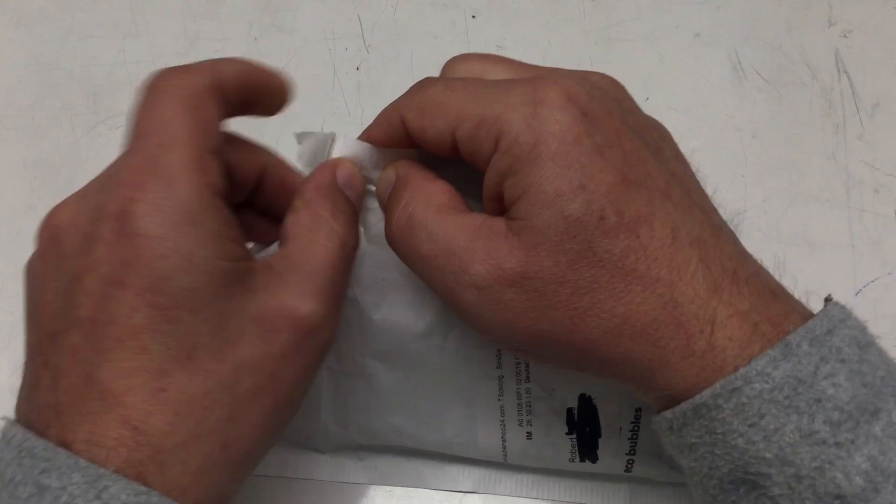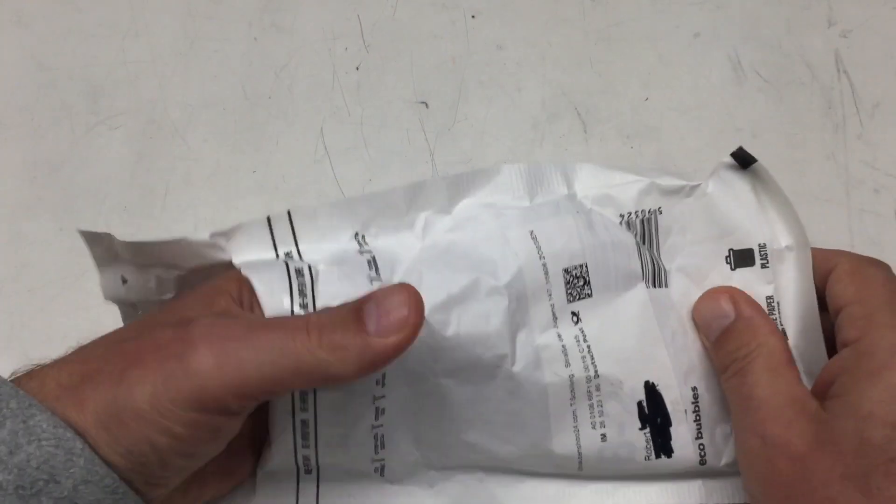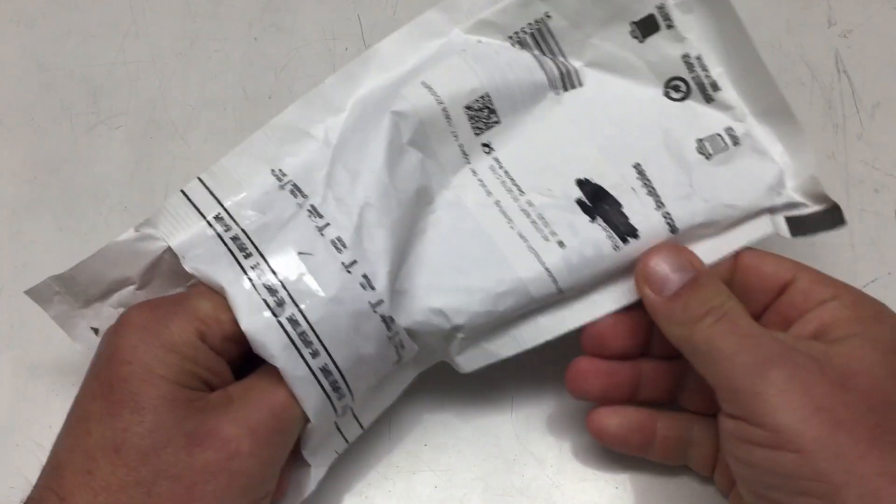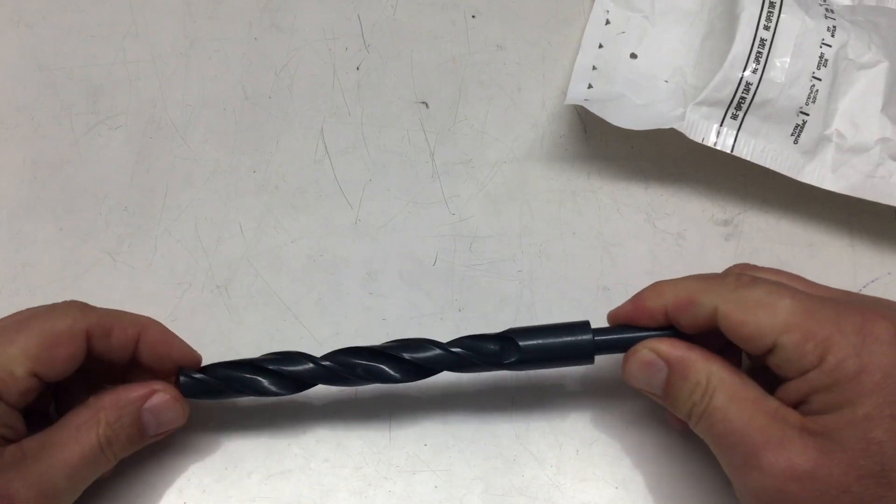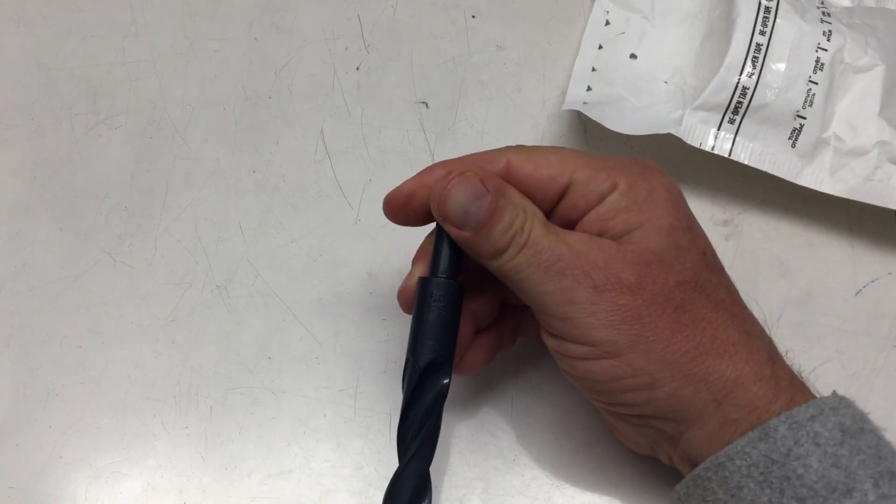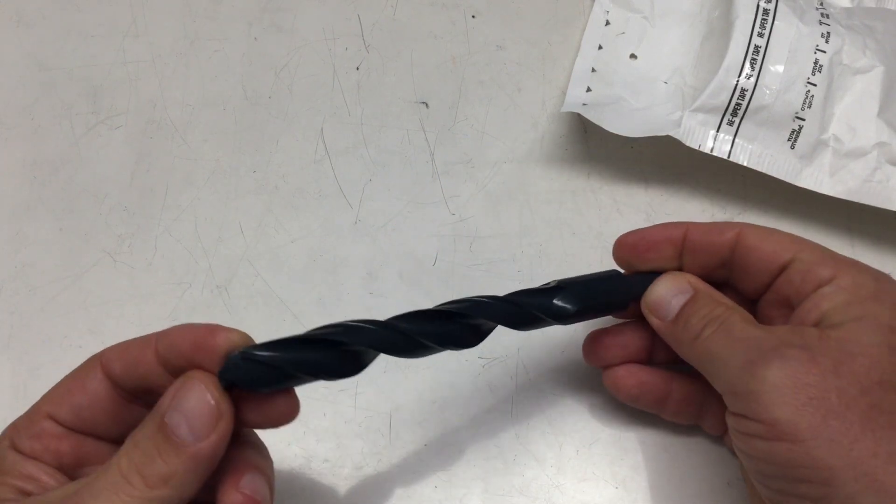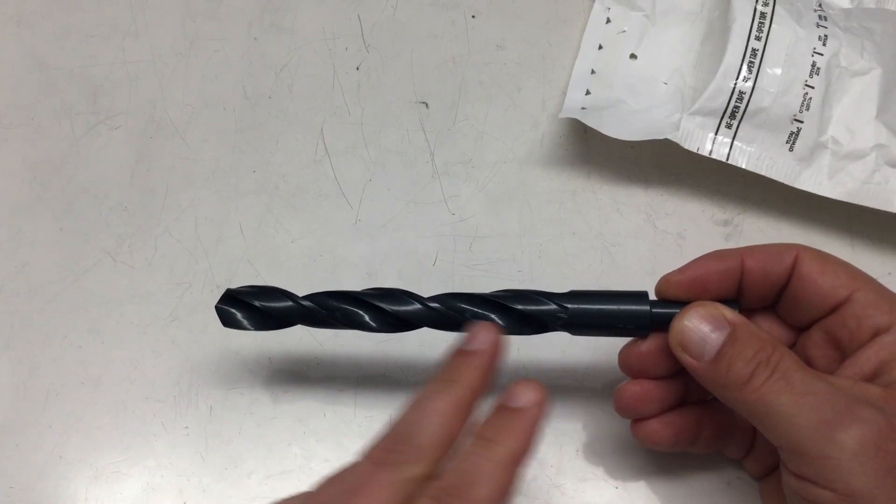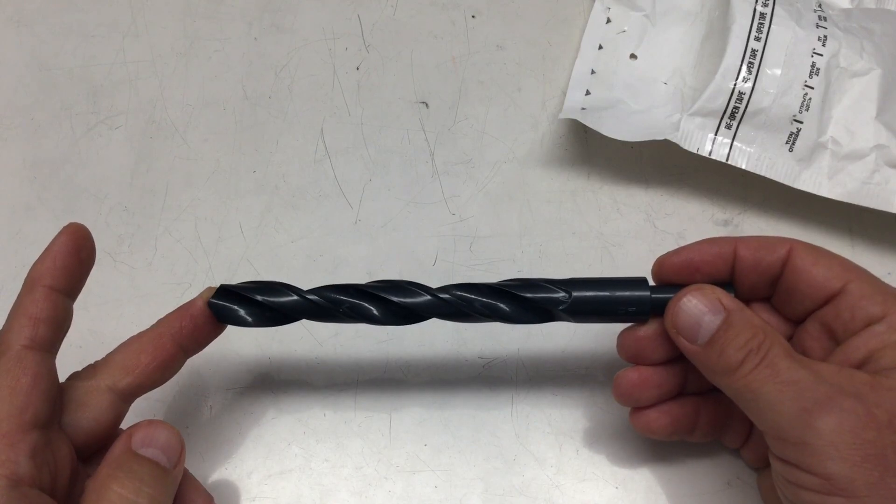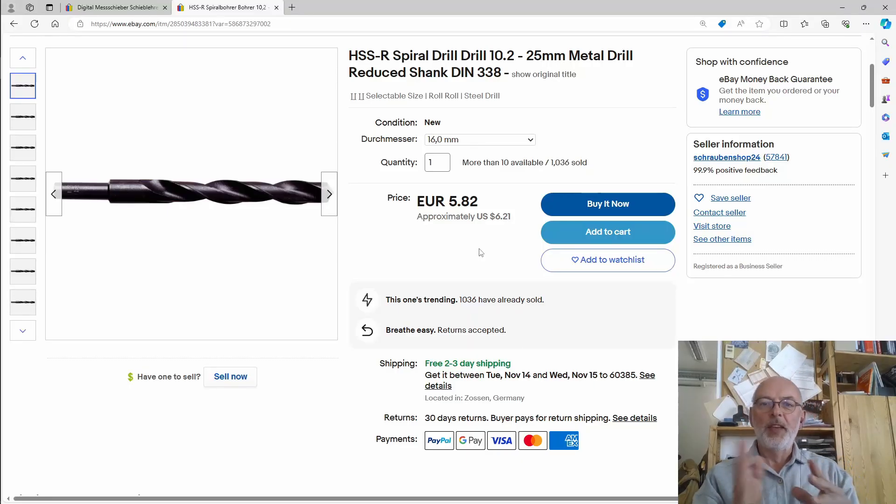Next we have another envelope. No paperwork inside, we're safe. And this is a bit sticky. This is supposed to be an HSS 16mm drill with a reduced 10mm shaft. And obviously I will need that in the future to drill a 16mm hole through something. That drill also came from eBay, same game, I bought it on eBay Germany, showing you here the listing on eBay.com. And I got it for $5.82 with free shipping from Schraubenshop24, that is the screw store 24.